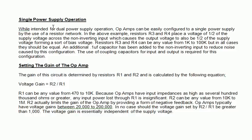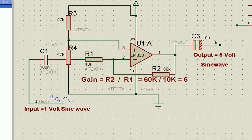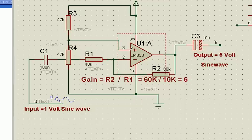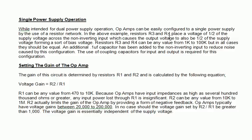It is single, normally it is a dual power supply people follow, but op-amps can easily be configured to a single power supply by use of a resistor network. In the above example we have R3, R4 placing a voltage of half of the supply voltage across the non-inverting input. This is the non-inverting input which causes the output voltage to also be half of the supply voltage, forming a sort of bias voltage.